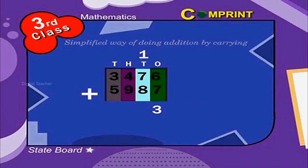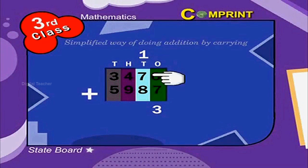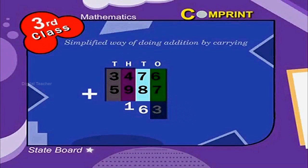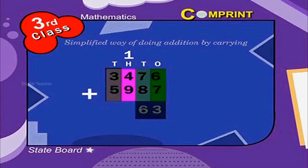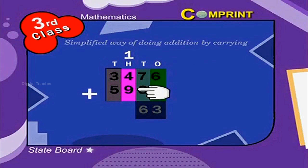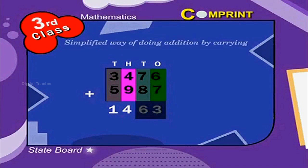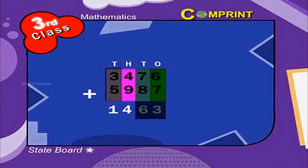Step 2: add the digits of the tens place. One plus seven plus eight. We get the answer 16. Carry the digit one of the tens to the hundreds place. Step 3: add the digits of the hundreds place. One plus four plus nine. The answer is 14. Carry the digit one of the tens to the thousands place.